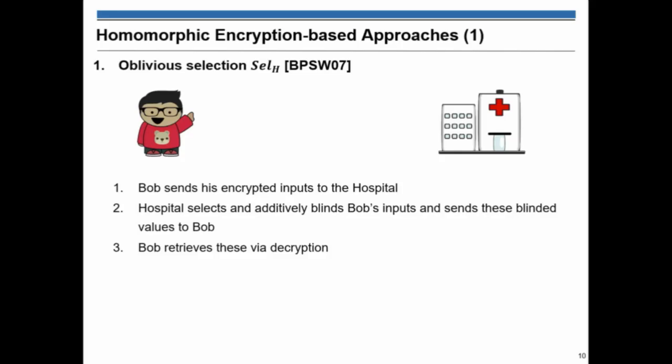Because this is a systematic review, a study of lots of papers, I won't go into detail. In the oblivious selection based on homomorphic encryption, Bob sends encrypted inputs to hospital. The way that it works, this selection is that the hospital just blinds these inputs by adding a random value to it. And then send it back to Bob and then Bob retrieves these values by decryption.